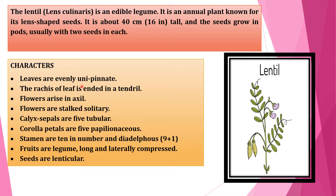Now, characters. Leaves are evenly unipinnate, as you can see. The rachis of the leaf is ended in a tendril — that means this last portion of the leaf ended in a tendril, which is this one here.